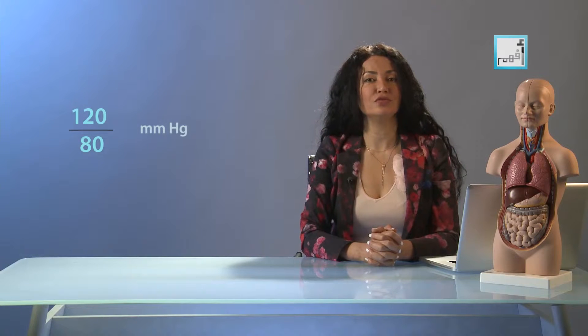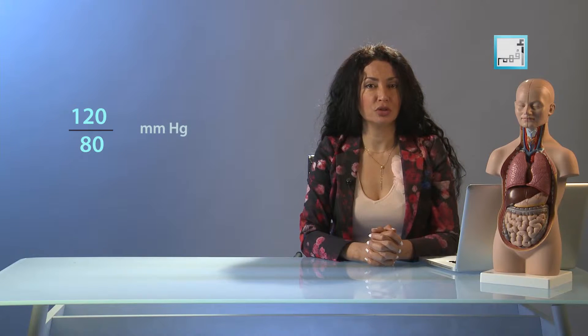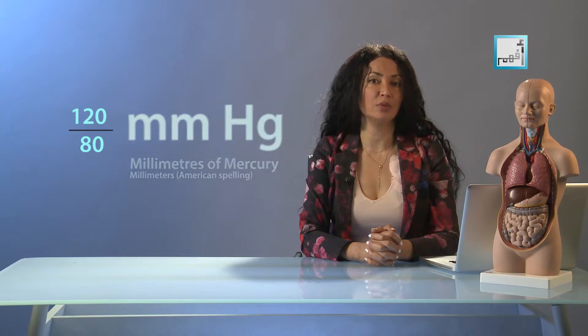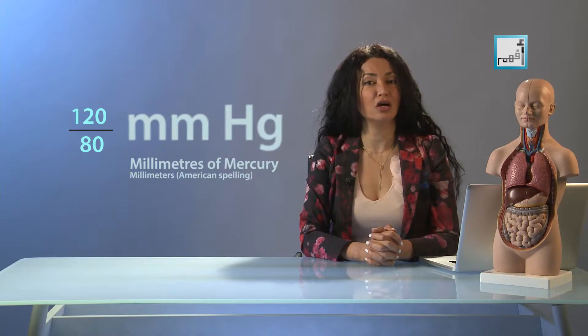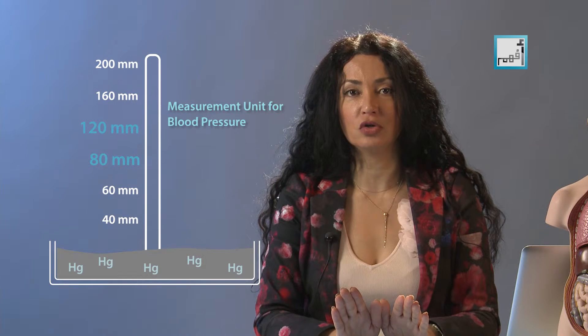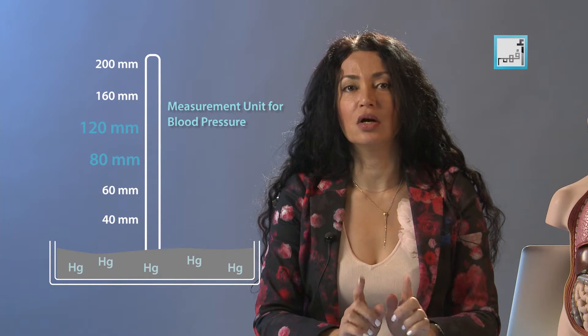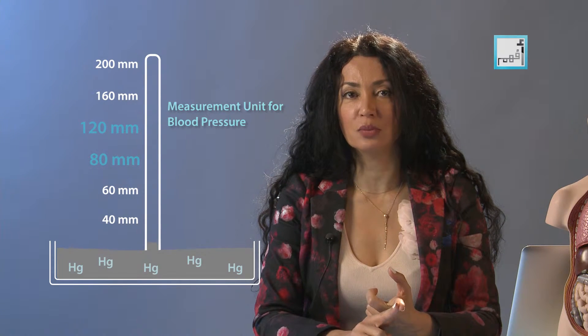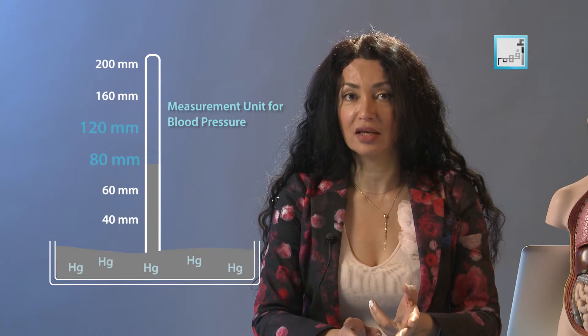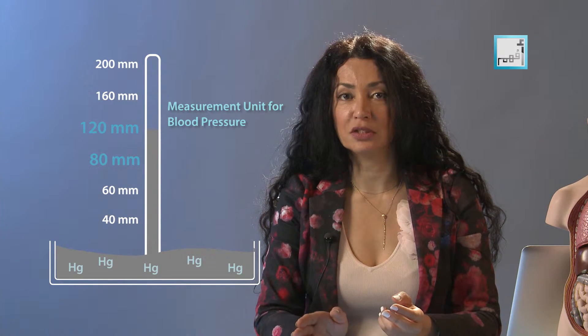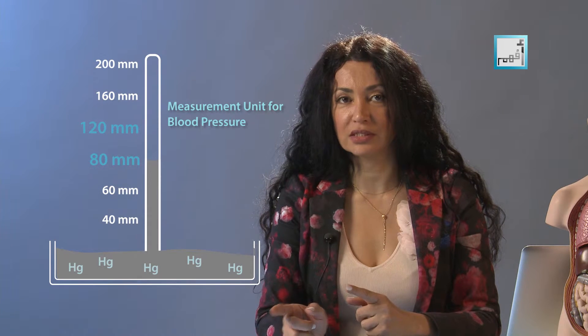Now let's have a further look at the measurement unit of blood pressure. We say, for example, that my blood pressure is 120 over 80 millimeters of mercury, which means that the blood presses on the walls of the arteries with the same pressure of a one-millimeter thick column of mercury with the height of, say, 120 millimeters, which is the value we read.